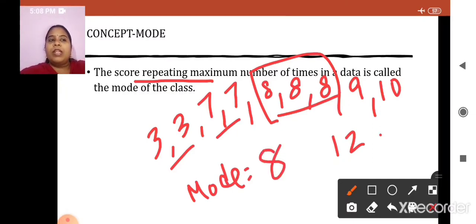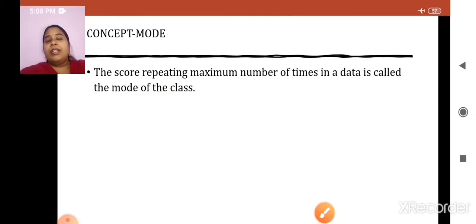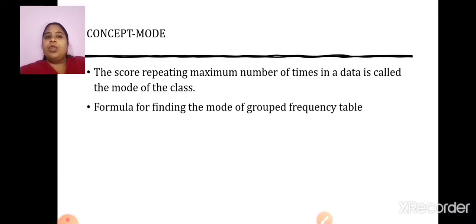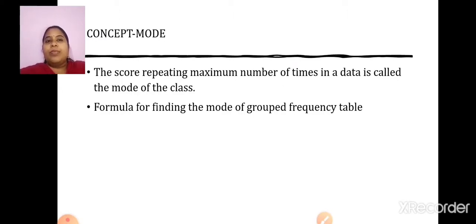I hope you are understanding and recollecting this concept from 9th standard. This is easy to understand when the given observations are ungrouped. But what if the observations are grouped? Then we have a formula for finding Mode for a grouped frequency table.